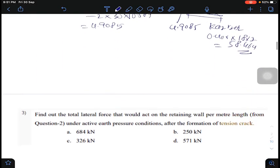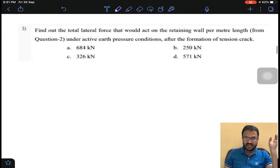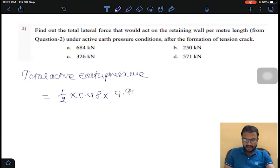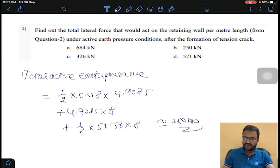Coming to third question of the assignment, in the same diagram this data is related. Total active earth pressure equals the area of the diagram after formation of tension cracks. Half into 0.48 into 4.9085 into 8 plus half into 51.156 into 8. You will get around 250 kilonewtons. Option B for question number 3.